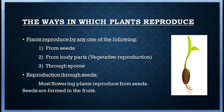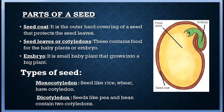First is reproduction through seeds. Most flowering plants reproduce from seeds, which are formed in fruits. The parts of a seed include the seed coat, which is the outer covering of a seed, the seed leaves or cotyledons, which store food for the embryo, and the embryo, which is a small baby plant that grows into a big plant.